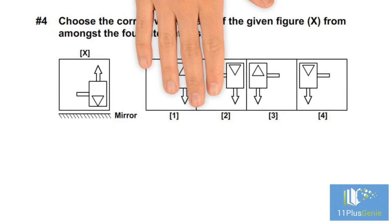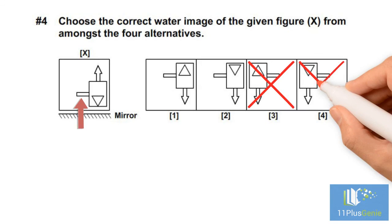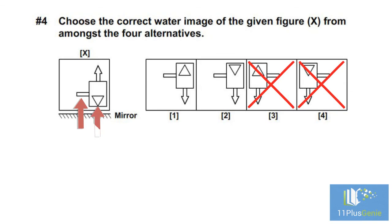Number 4 – Choose the correct water image of the given figure from amongst the four alternatives. Remember, with a water image the left of the object is also the left of the image. This rectangle must be on the left of the image. We can eliminate diagram 3 and diagram 4. This triangle points downwards in the object. It must point upwards in the water image. The correct answer is diagram 1.